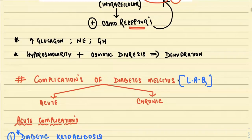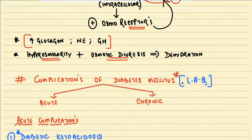In cases of insulin deficiency or insulin resistance, counter-regulatory hormones increase — you will have excessive glucagon, norepinephrine, and growth hormone — which are also responsible for dehydration, not only through osmotic diuresis but also through hyperosmolarity. Now let us discuss the complications of diabetes mellitus, which include both acute and chronic complications.